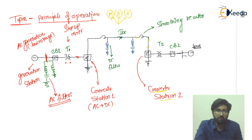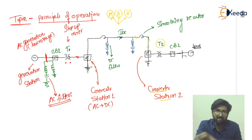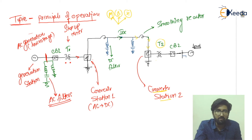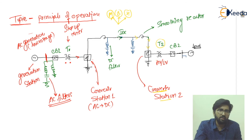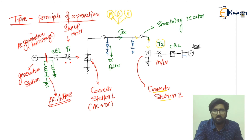The power then flows to converter station number two, where DC-to-AC conversion takes place. Transformer T2 then steps down the voltage from high voltage to low voltage for distribution. A circuit breaker handles any short circuit or overcurrent conditions, and finally there is an AC filter at the output.